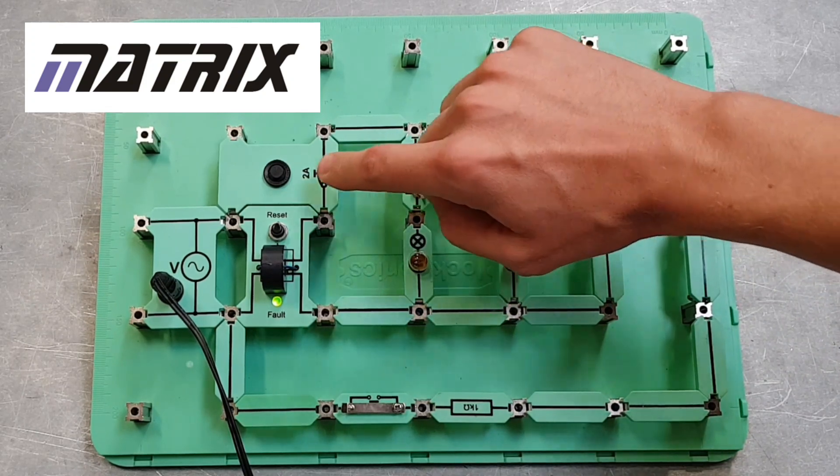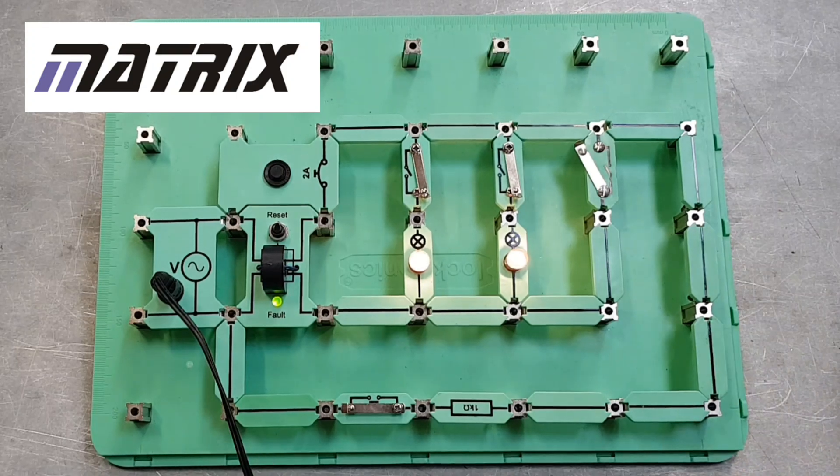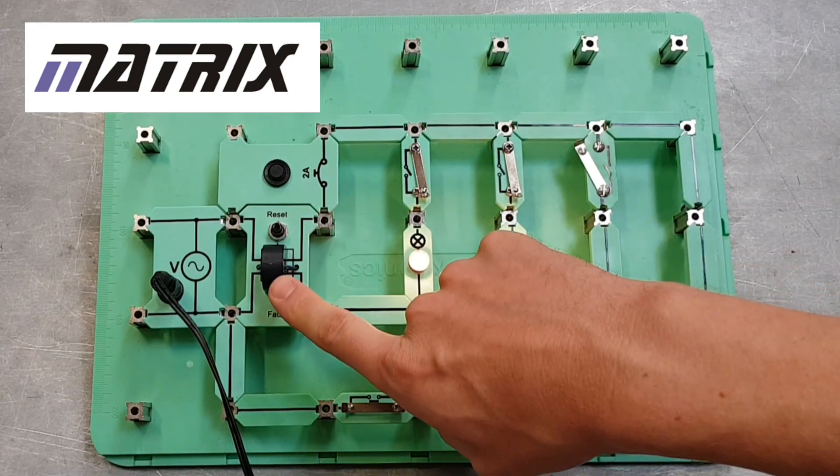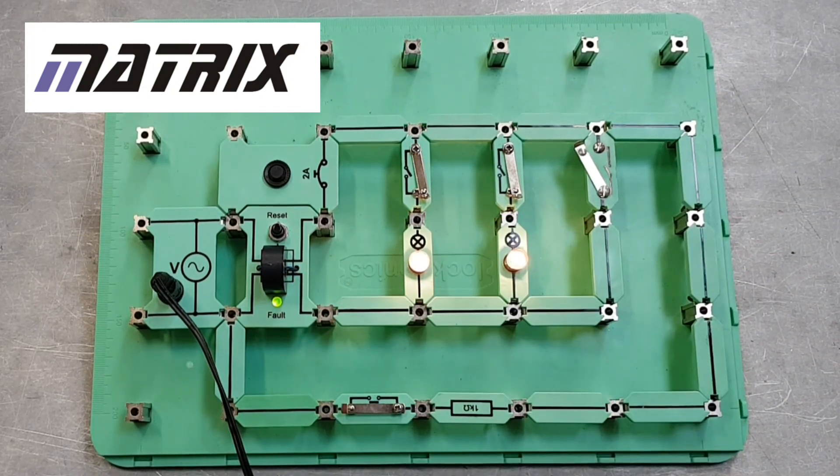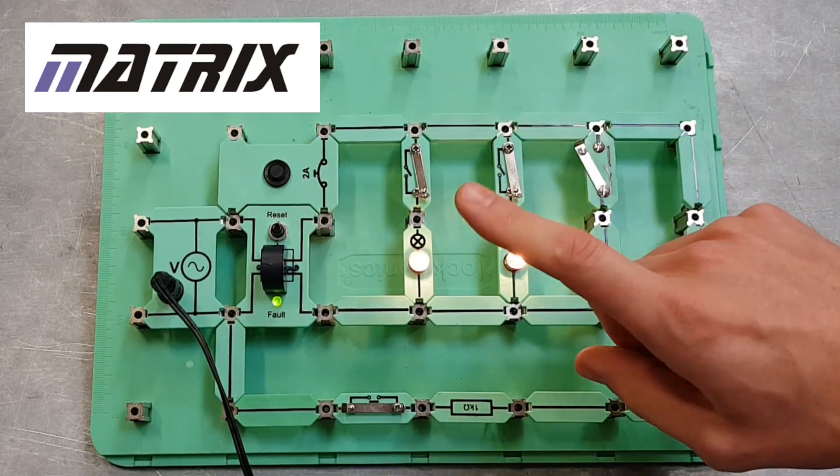What a beautifully elegant way of explaining how an RCD works - it's looking for an imbalance in the current flow down the line and back down the neutral again - but also how important it is that if we install RCD protection, there also has to be some kind of overcurrent protection as well.